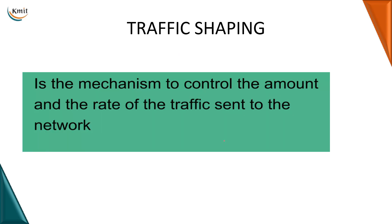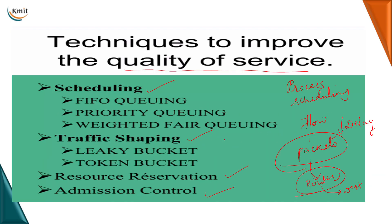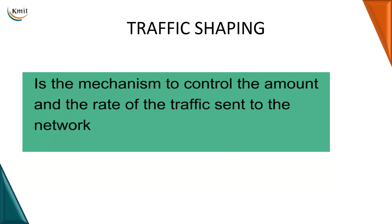Coming on to the next technique for improving the quality of service — the next technique is traffic shaping. What is traffic generally? Traffic is termed as the amount of data or the amount of packets coming on to the network. If there is very high traffic and you are still sending packets, then you will lose packets. When you are losing packets you are reducing the reliability. So you have to shape the traffic in such a way that you don't lose packets. Traffic shaping is a mechanism where we control the amount of data or packets in the network.